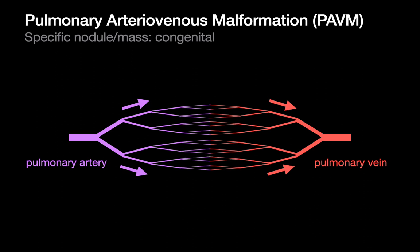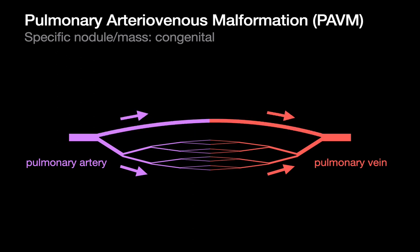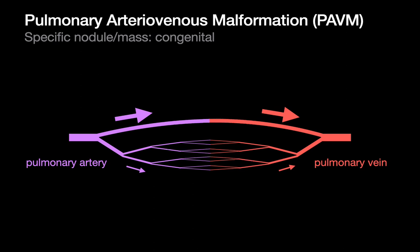That capillary bed is drained by small pulmonary venules that converge into larger and larger pulmonary veins. This capillary bed is a high resistance pathway. Occasionally, something unusual may happen — there may be absence of a high resistance capillary bed between a pulmonary artery and a pulmonary vein, creating a low resistance pathway for blood to flow from the pulmonary artery to the pulmonary vein.